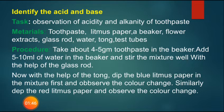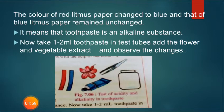With the help of the tongue tip, dip the blue litmus paper in the mixture first and observe the color change. Similarly, dip the red litmus paper and observe the color change. The color of red litmus paper changed to blue, and the blue litmus paper remained unchanged — it means that toothpaste is an alkaline substance.